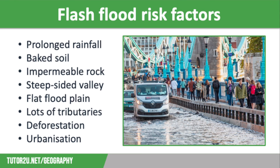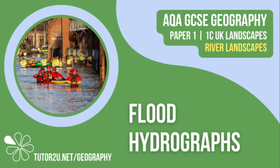Further factors include a small river basin where tributaries join the main river quickly, increasing discharge; deforestation, which reduces interception and the ability to absorb water; and urbanisation, where land is covered in impermeable concrete and tarmac, increasing surface runoff. That concludes this Tutor2U revision video focusing on flood hydrographs. Thank you for watching.